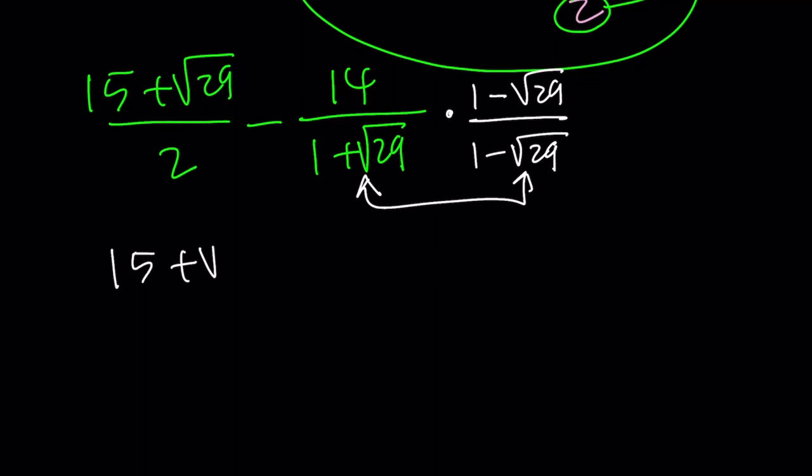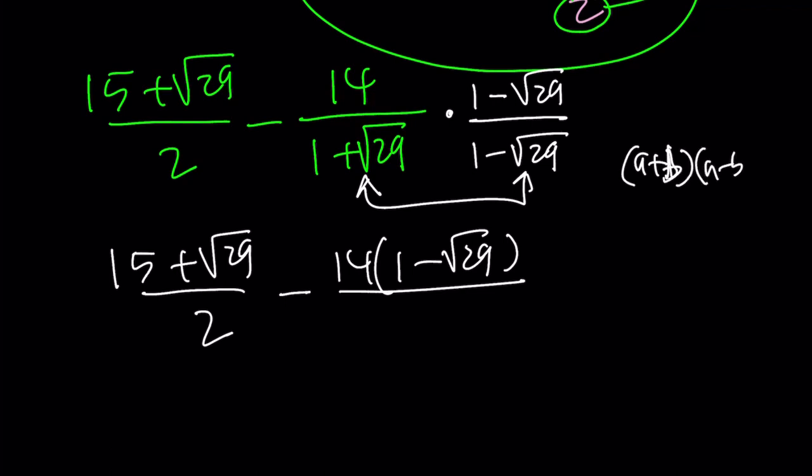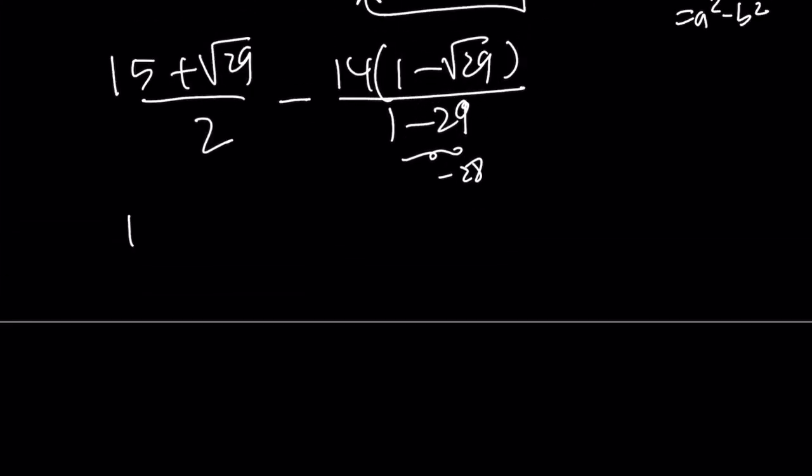15 plus root 29 over 2 minus 14 times 1 minus root 29 divided by... what is the product of these two things? A plus B times A minus B. A minus B is equal to A squared minus B squared. So this becomes 1 minus 29, which is negative 28. But that's a negative at the bottom, which doesn't look good. And there's a minus sign. So why don't we just negate both? And that's going to give us the following: 15 plus root 29 over 2 plus 14 times 1 minus root 29. And all of that is divided by 28.